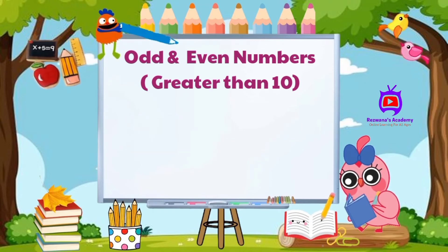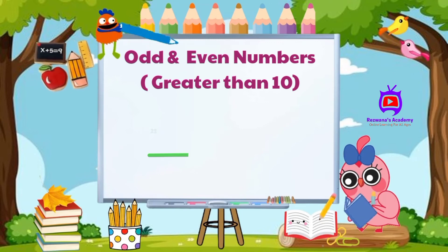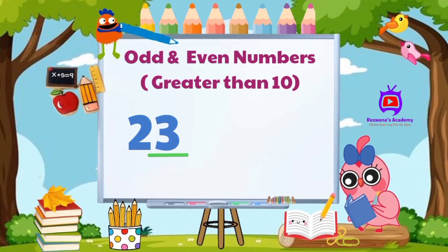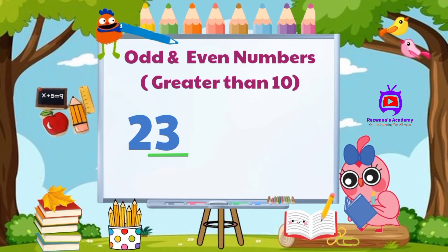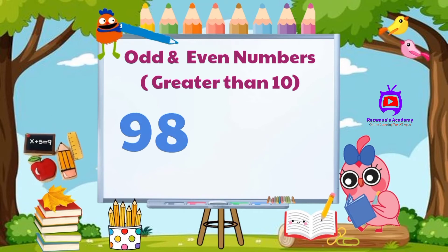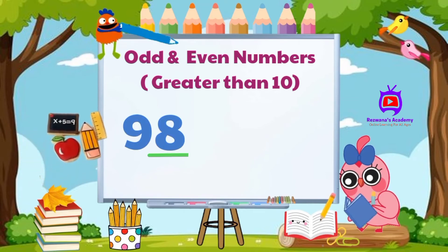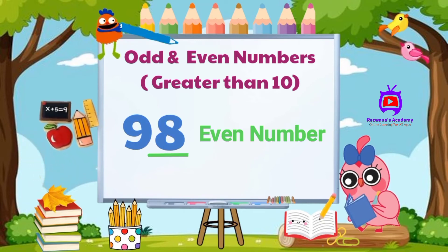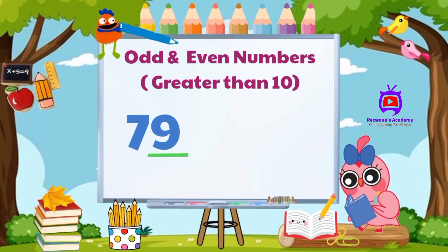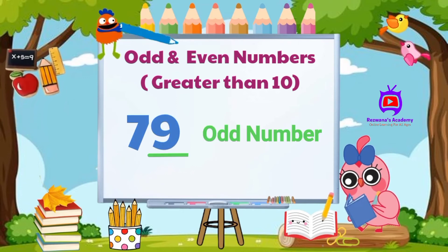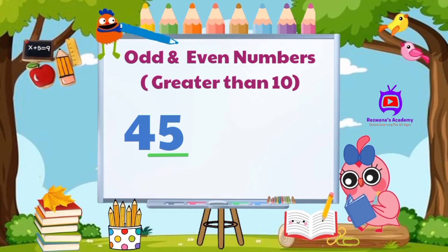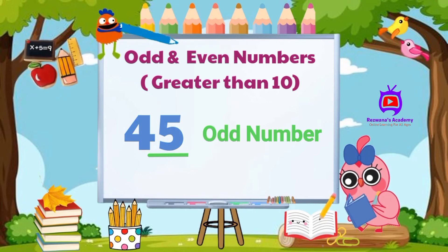Let us look at some more examples. For 23, three is the digit at the end — three is an odd number, so 23 is an odd number. Eight is an even number, so 98 is an even number. Nine is an odd number, so 79 is an odd number. Five is an odd number, so 45 is an odd number.